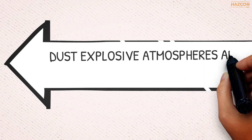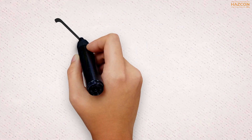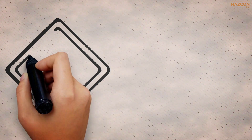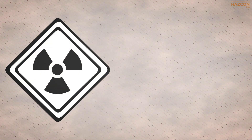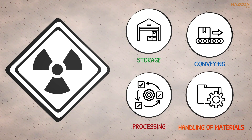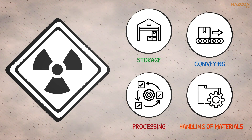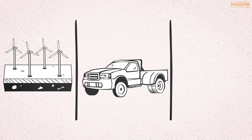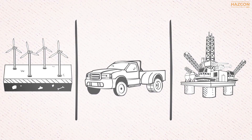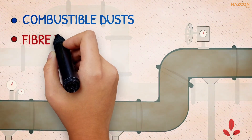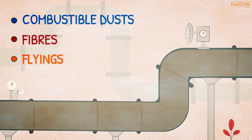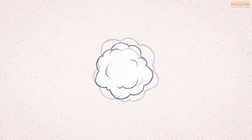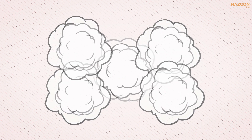Dust explosive atmospheres are common and dangerous. The hazards posed by explosive dusts should not be underestimated. These hazards exist wherever dusts are present during storage, conveying, processing, and handling of materials that generate them. Almost every industry faces dust explosion hazards, from agricultural to automotive to refining. Dust explosive atmospheres are hazardous due to the presence of combustible dusts, fibers, or flyings — small combustible particles that can burn easily and rapidly.